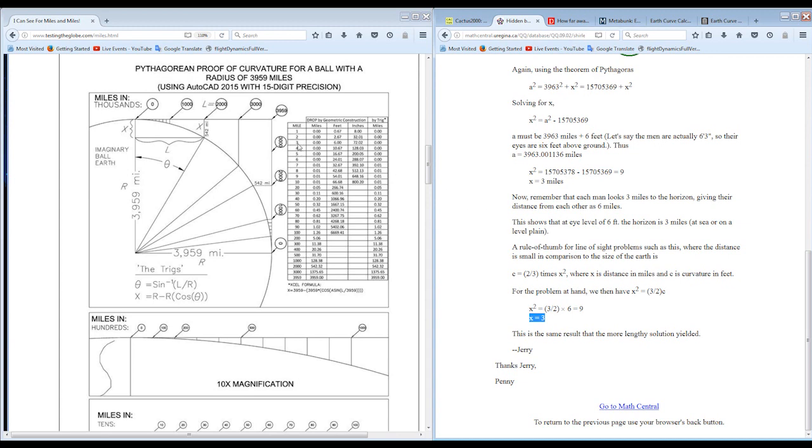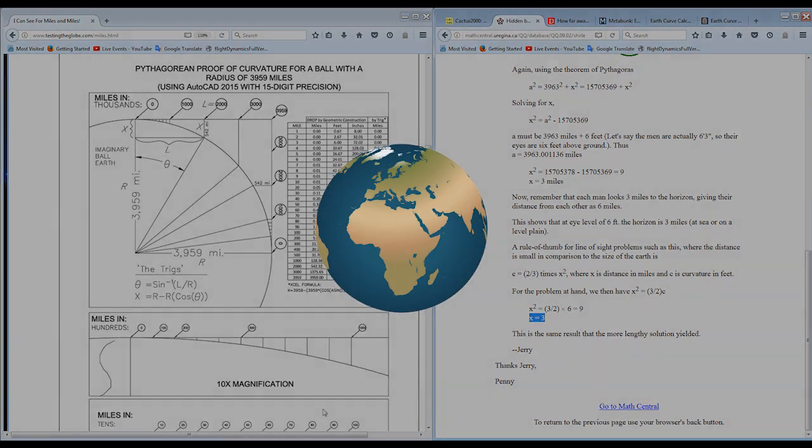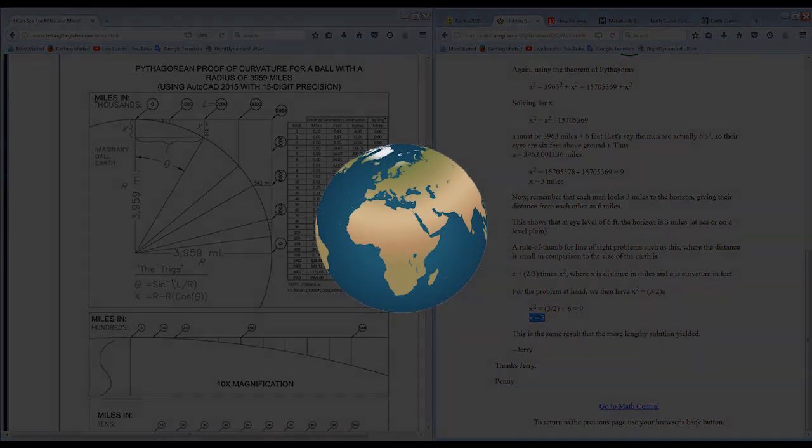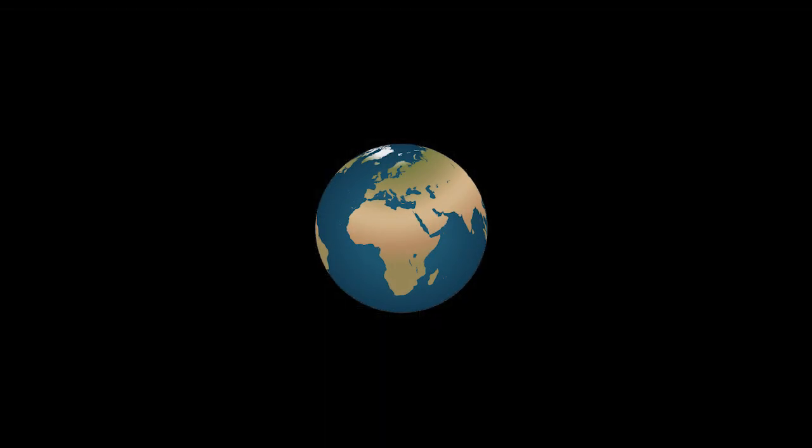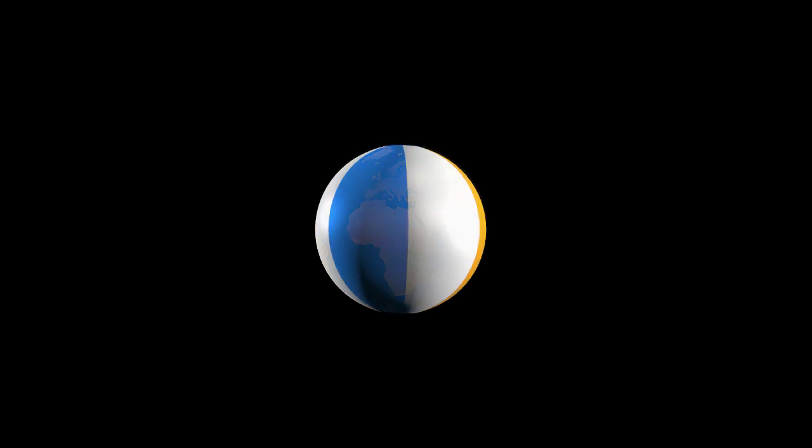Assuming your eye level is at the ground, 3 miles, 6 foot is obscured. Now this is what's interesting, and I'll create a little animation here for you to be able to visualize what I'm thinking here. Let's just imagine our world as a beach ball.